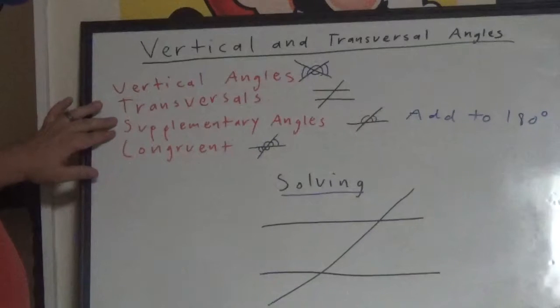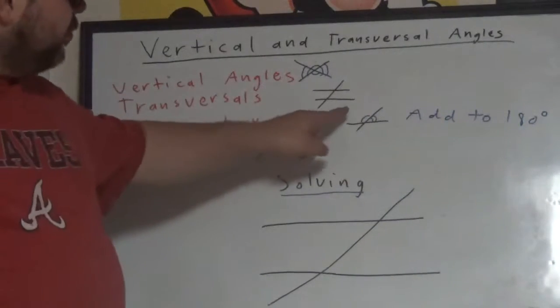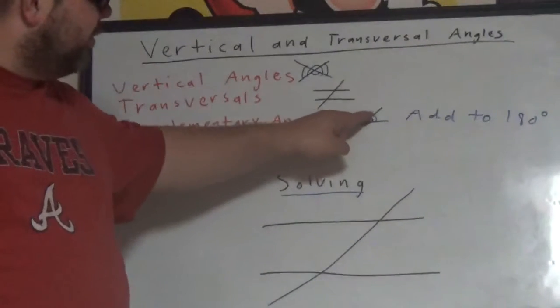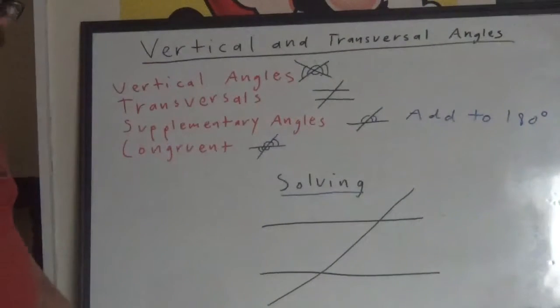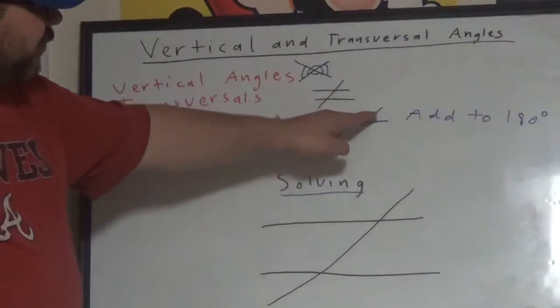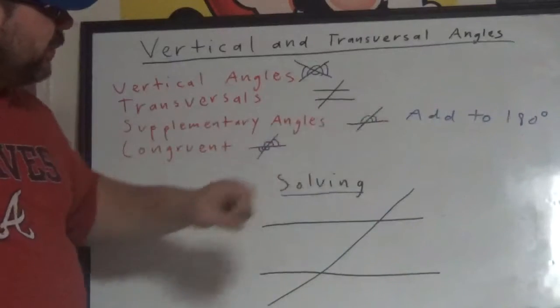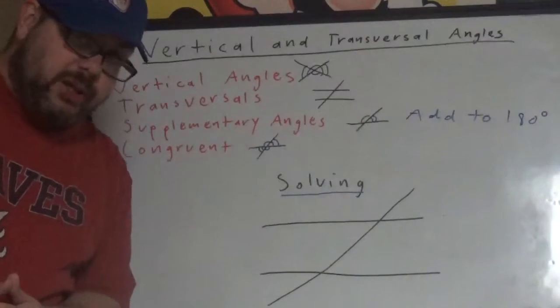We have supplementary angles. Supplementary angles are two angles that add to 180 degrees. In this example, the two angles I marked are supplementary. They add to 180 degrees.